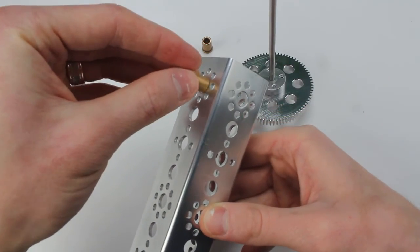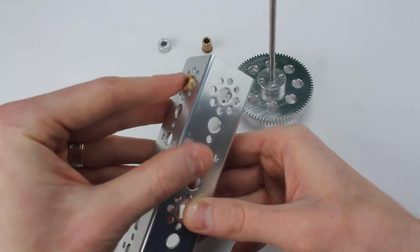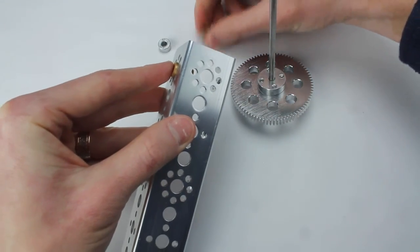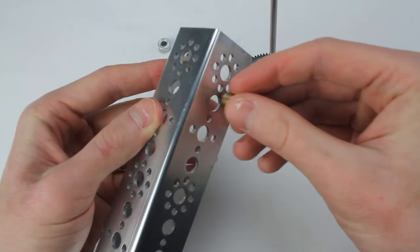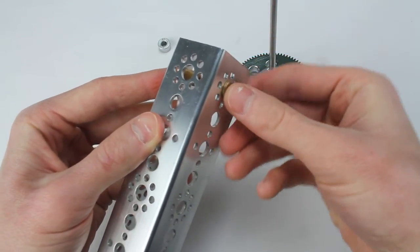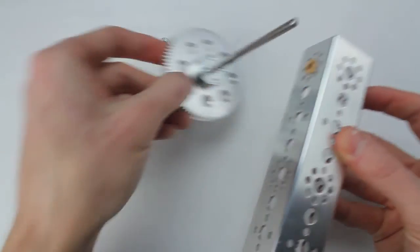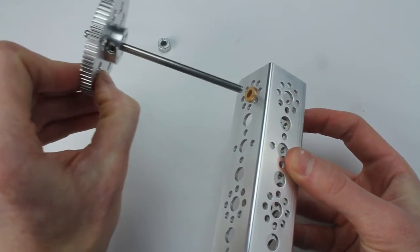Place bushings through the tetrix holes where you will mount the gear. The axle can then be put through the bushings.